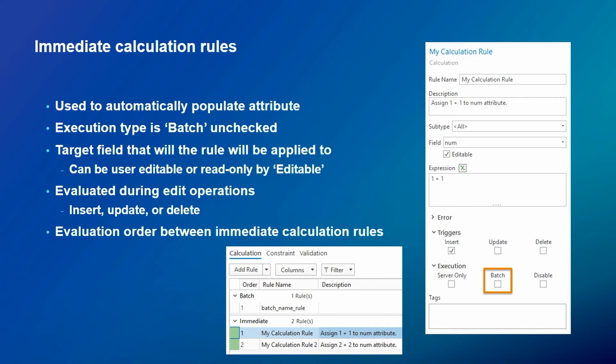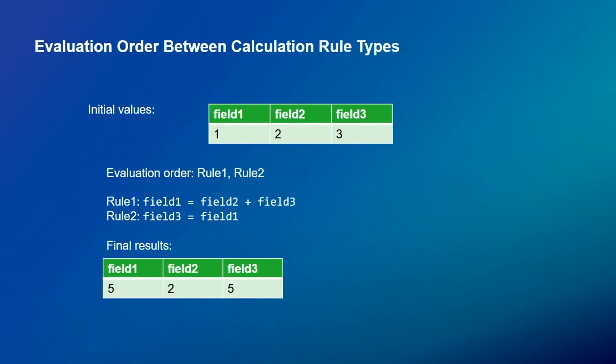The calculation order matters. Consider a simple table with three attributes — field one, two, three — with values 1, 2, 3. Rule one adds field two plus field three and assigns it to field one. Rule two assigns field one's value to field three. If we evaluate rule one first then rule two, two plus three is five assigned to field one, then field three becomes five, so the result is 5, 2, 5.